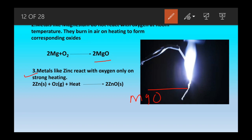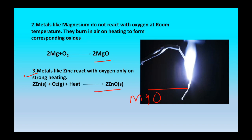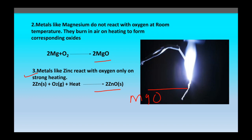Metals like zinc react with oxygen only on strong heating. When zinc is strongly heated with oxygen it produces zinc oxide. So this is the second chemical property of metals: when metals react with oxygen they form their corresponding oxides.